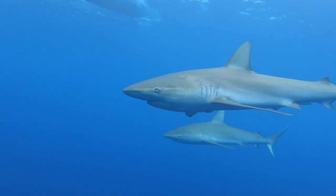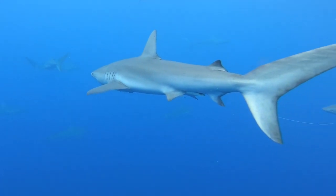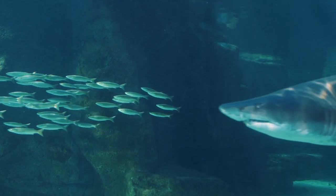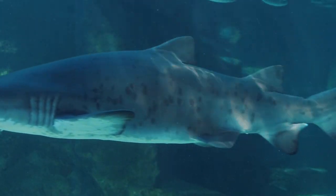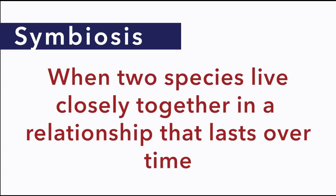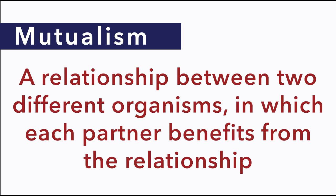Imagine a great white shark cruising towards you through tropical waters. As a human, your only thought would be to get out of the way. Yet one small fish called remora cannot get close enough. It uses suckers on its head to attach itself firmly to the shark's skin and then dines on bacteria and microorganisms that are unhealthy for the shark. Symbiosis occurs when two species live closely together in a relationship that lasts over time. The odd association between the fearsome shark and the little remora is an example of a symbiotic relationship called mutualism. Mutualism is a relationship between two different organisms in which each partner benefits from the relationship.